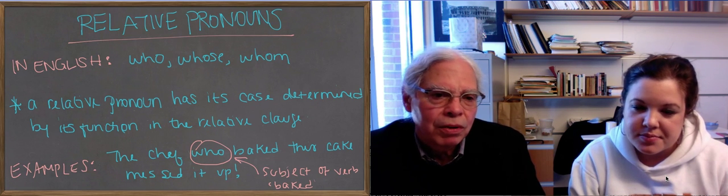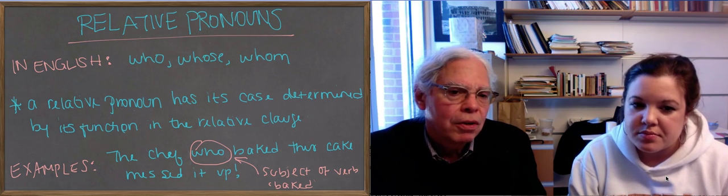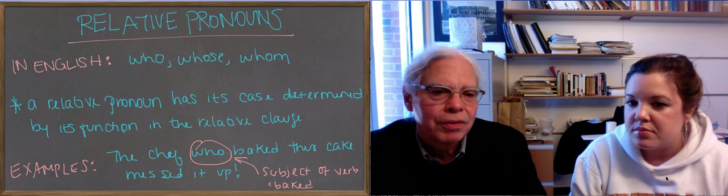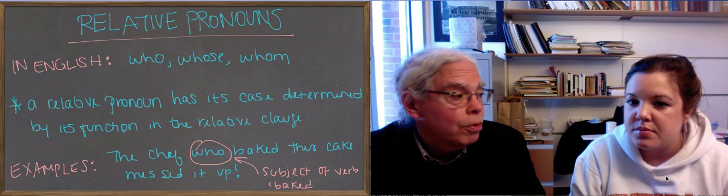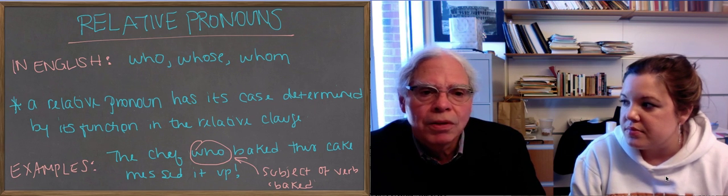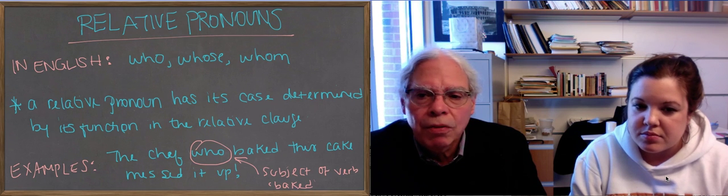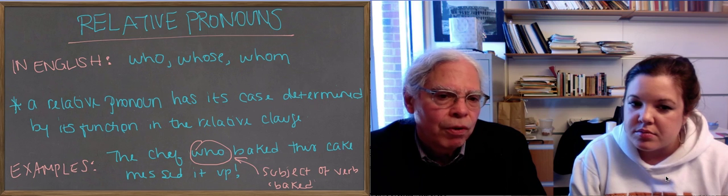The chef happens to be the subject of the sentence. But you could say it otherwise. For example, I dislike the chef who baked this cake. The who would stay the same. It has nothing to do with the case of the chef. It's all about what you want to say in the relative clause. So because who is the subject there, use the form who.